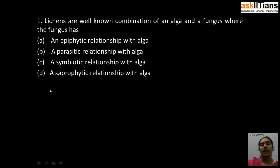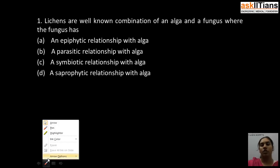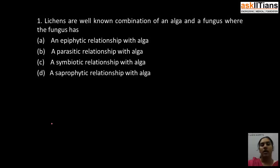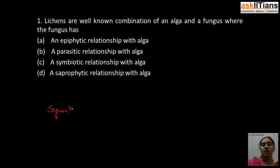Our first question is: lichens are a well-known combination of an alga and fungus where the fungus has — A) an epiphytic relationship with alga, B) a parasitic relationship with alga, C) a symbiotic relationship with alga, D) a saprophytic relationship with alga. The correct answer is C: a symbiotic relationship with alga. Lichen is a combination of fungus and an alga where fungus has a symbiotic relationship with alga.